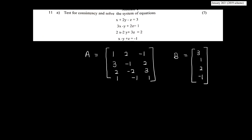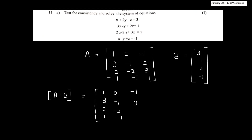We can write the augmented matrix [A|b]. The matrix A has entries: 1, 2, minus 1; 3, minus 1, 2; 2, minus 2, 3; 1, minus 1, 1. The right-hand side b is: 3, 1, 2, minus 1. This is the augmented matrix.